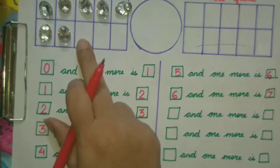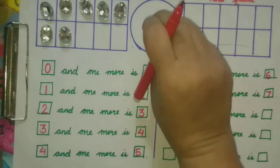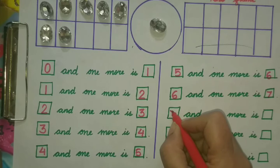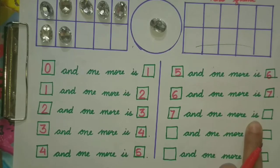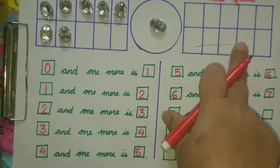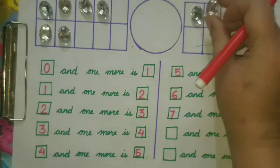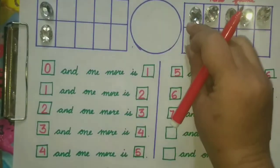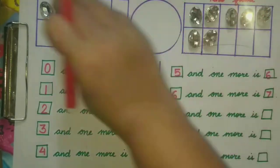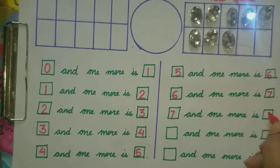Now we will bring this 7 to the first ten frame. Here we have 7 objects. 7 and 1 more — so our first number is 7. To find their total, we will bring all of them to the second ten frame and count: 1, 2, 3, 4, 5, 6, 7, 8. So 7 and 1 more is 8.